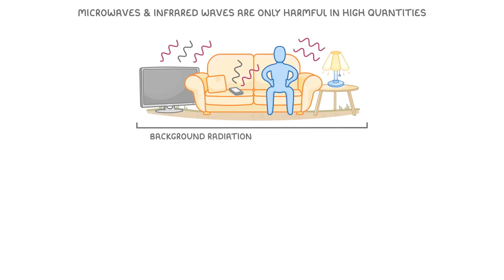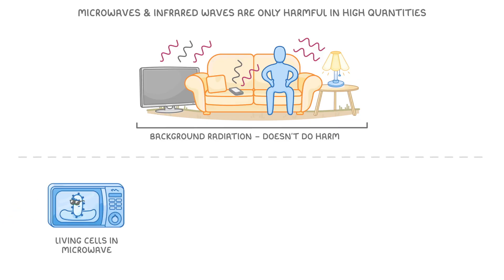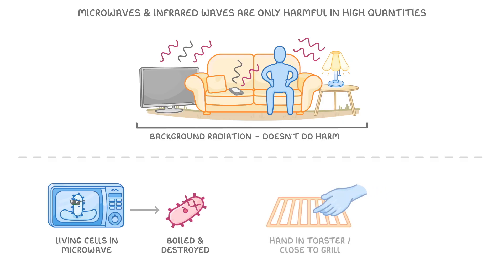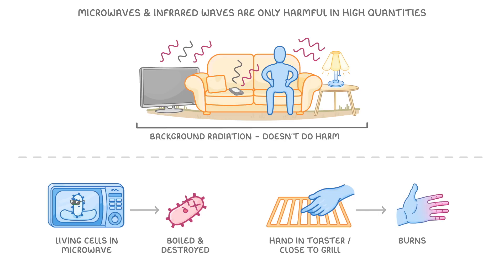The last thing we need to say is that microwaves and infrared waves are only harmful to us in high quantities. The background radiation that we receive from our surroundings doesn't really do us any harm. But if you put living cells in a microwave, then they'd boil and be destroyed. And if you put your hand in a toaster, or too close to a grill, then you'd probably get burns, as all of your nearby skin cells would get destroyed.